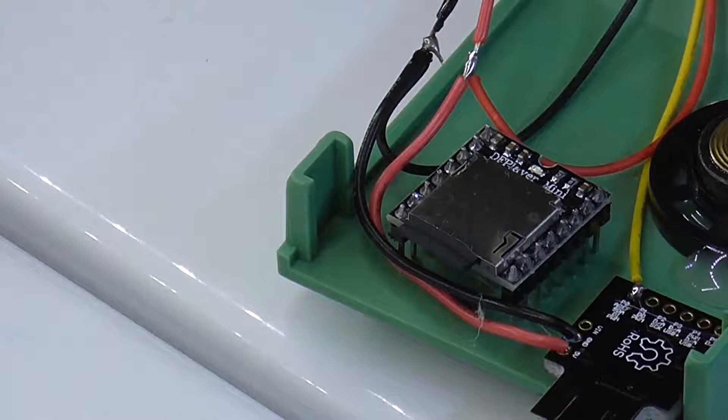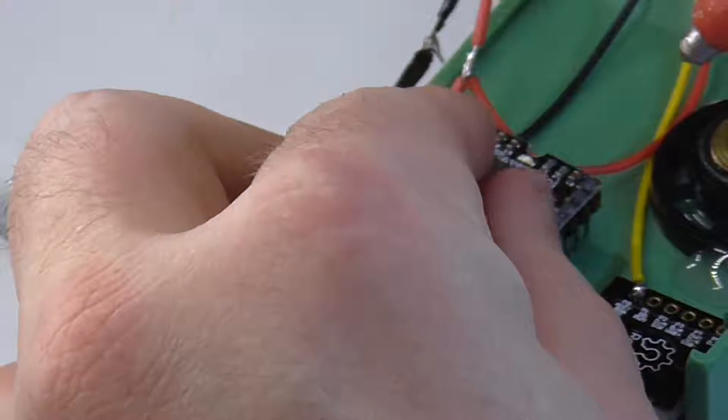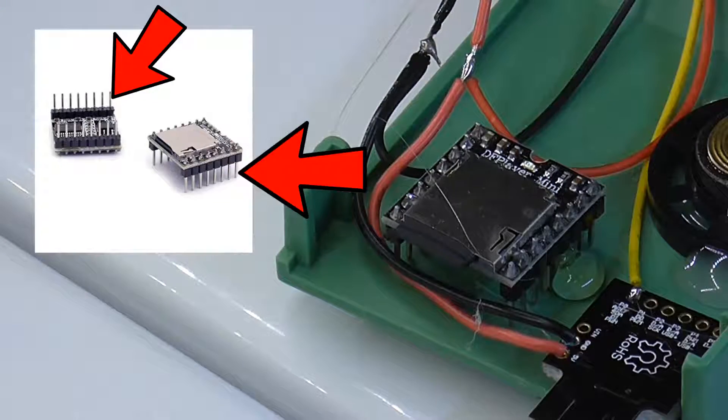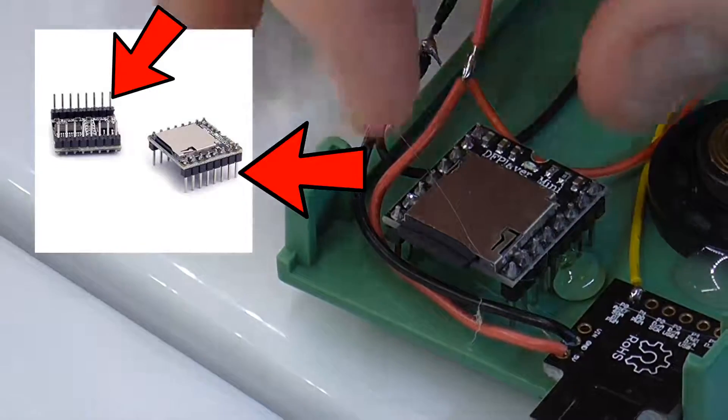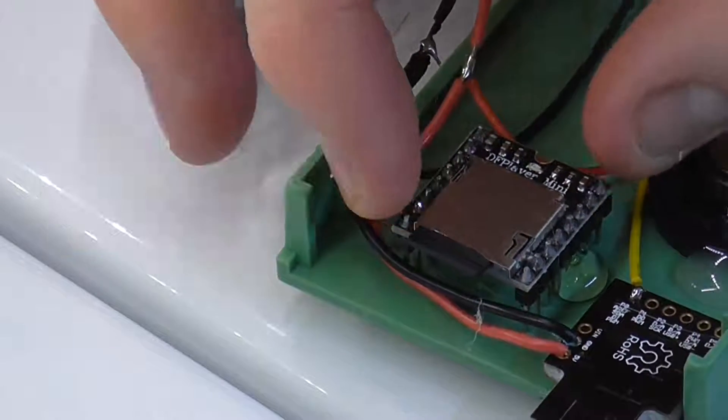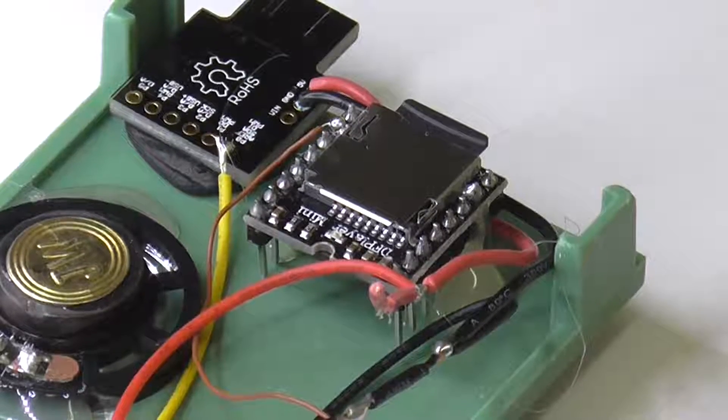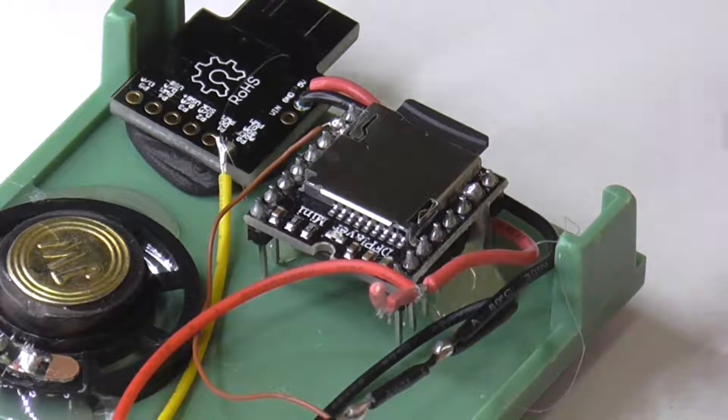When placing down the MP3 player module that will be playing the audio clip when triggered, the header pins proved to be a handy place to apply glue to secure the module. We'll be doing our soldering on the top of the pins rather than the bottom.